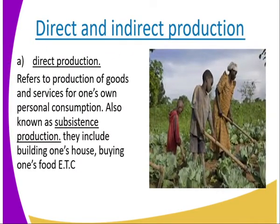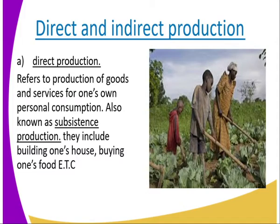We start with direct and indirect production. When we talk about direct production, it refers to the production of goods and services for one's own personal consumption. For example, looking at the image next to us, it shows a family cultivating what they need to consume for themselves. This is also referred to as subsistence production.